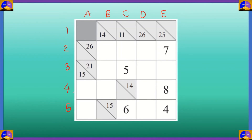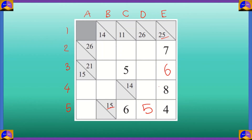Now let's look at the cell D5. The target number is 15 and we already have the numbers 6 and 4. 6 plus 4 equals 10 and 15 minus 10 equals 5. So in D5, the number will be 5. Let's look at column E. The target number is 25 and we already have the numbers 7, 8 and 4 which add up to 19. 25 minus 19 is equal to 6. Next, let's look at the cell C2. The target number is 11 and we already have a 5, and 11 minus 5 equals 6. So 6 will go in C2.